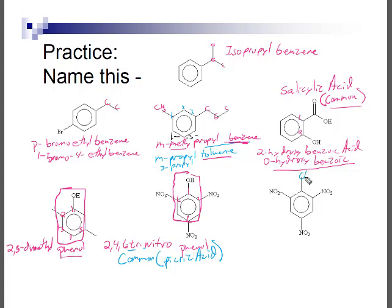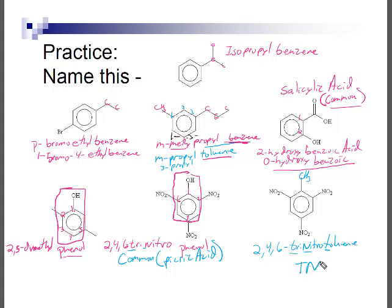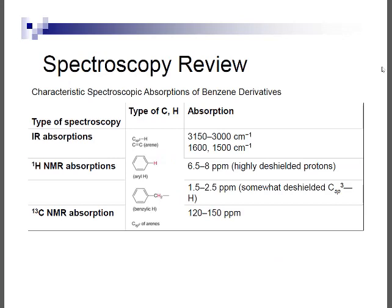The last example: a toluene with nitro groups at the 2, 4, and 6 positions gives 2,4,6-trinitrotoluene — TNT, an explosive.